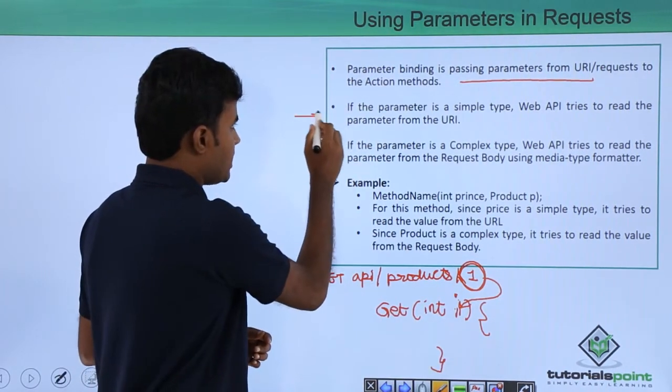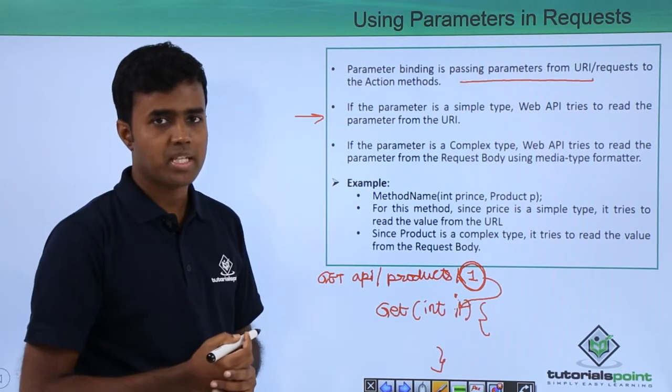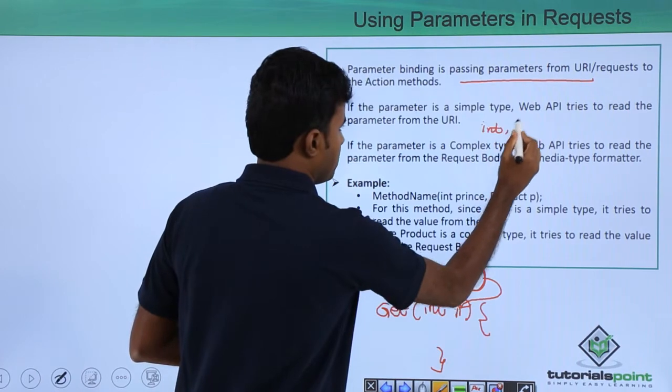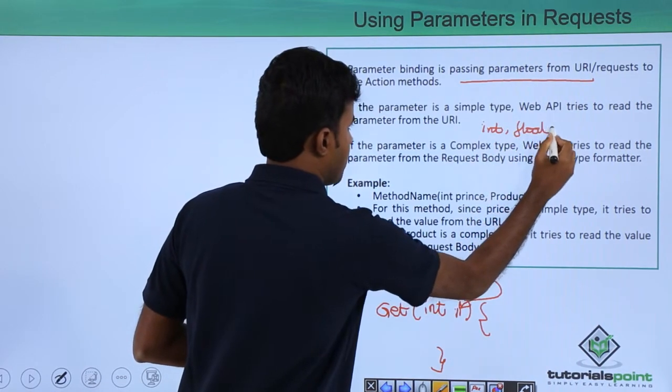If the parameter is a simple type, what we mean by simple type is nothing but integer, float and so on.